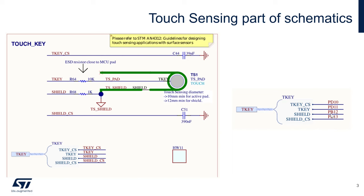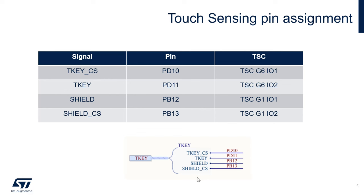The shield uses two IOs on the STM32U0: PB12 and PB13. This is a driven shield design. To summarize the advantages of a driven shield: it protects the touch electrode from noise sources, removes touch sensitivity from the cable and tracks between the electrode and the STM32, and increases system stability and performance when there is a moving metal part close to the electrode.